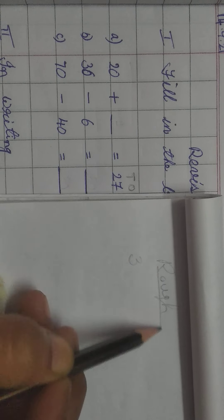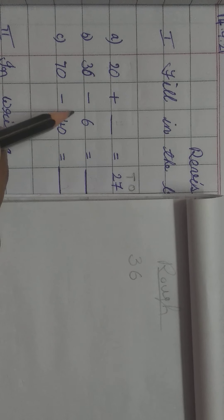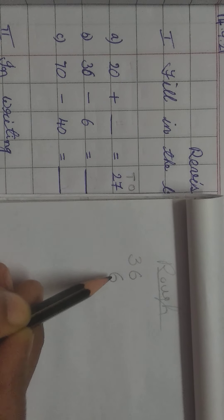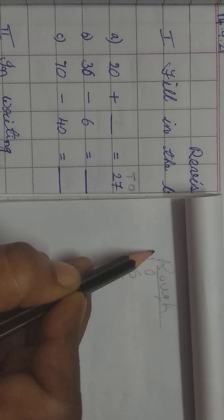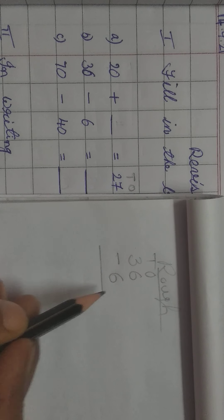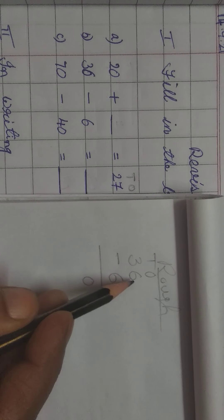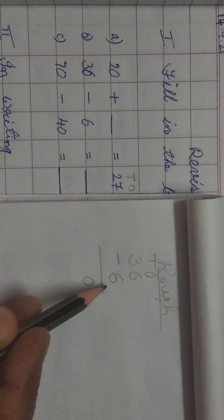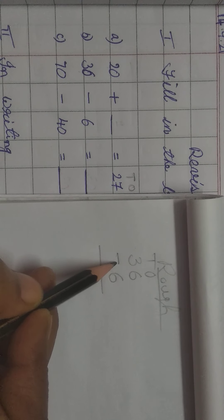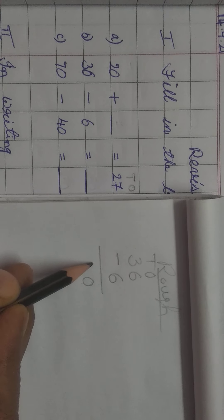36 minus 6 kaise karengi? Rough. 36 minus 6, 6 is a single number. Jab bhi single number aap dekhte hai, ones place me isko fill karengi. Write ones and tens. 36 minus 6. So 6 minus 6 is equal to 0 hai na? Same number ko ek number me se doosra number minus karengi, to 0 milta hai na?